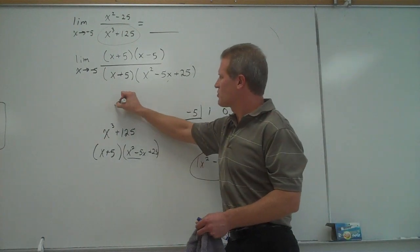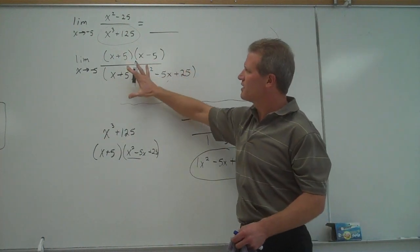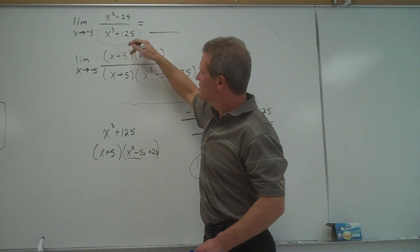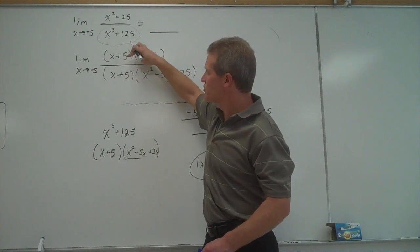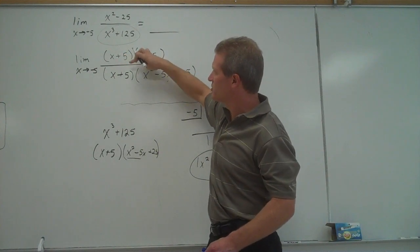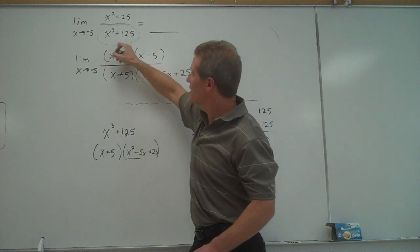Once you get, so this is kind of my scratch work down here. Up here, I'm still finding the limit. Now I can cross off the x plus 5 because x plus 5 is what's causing these numerators and denominators to come up to 0. If I cancel those out,